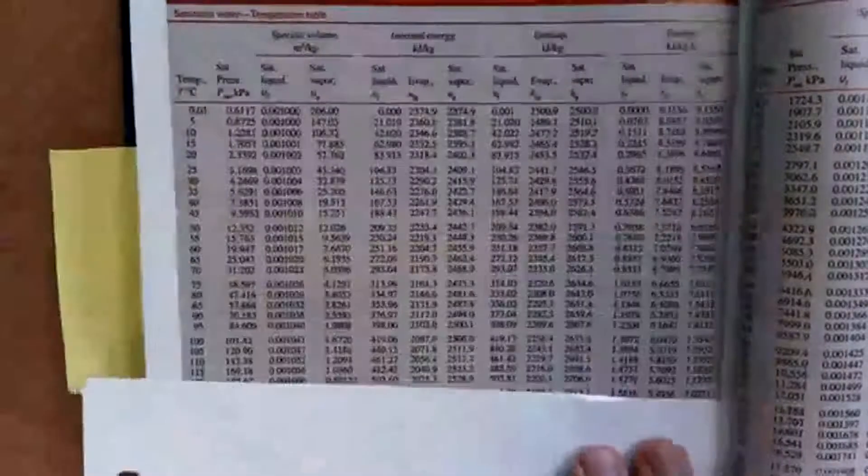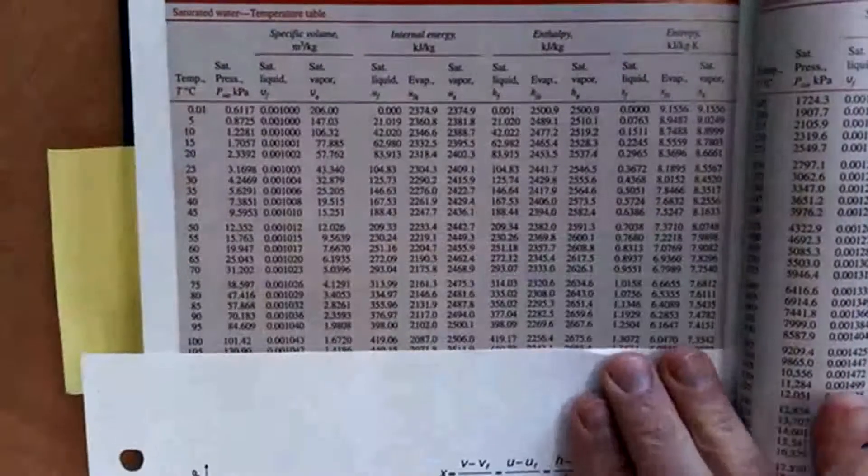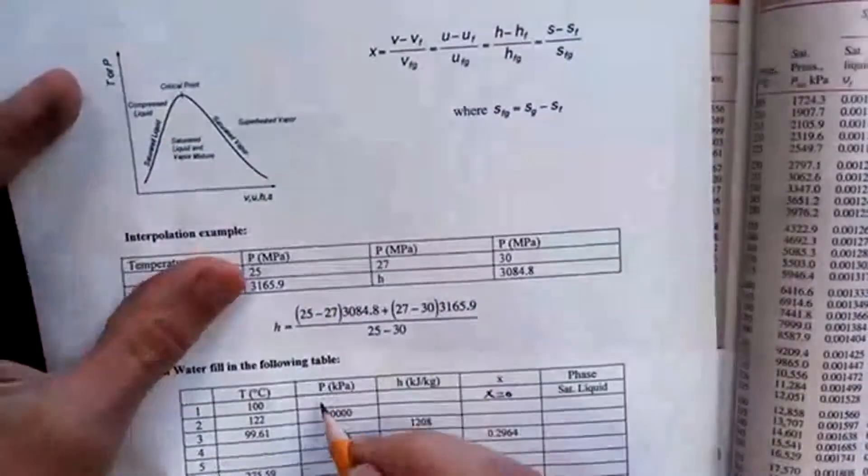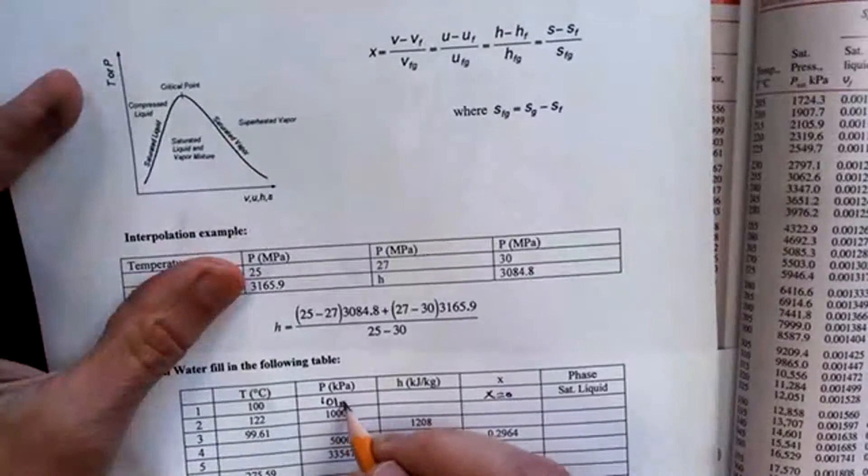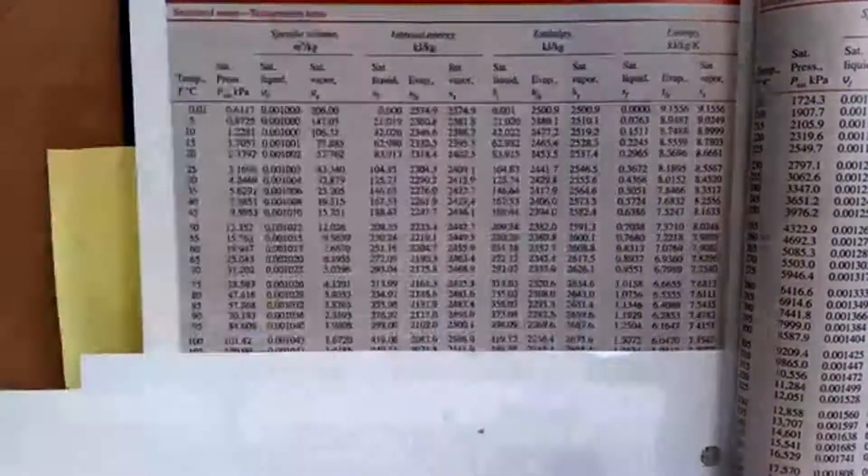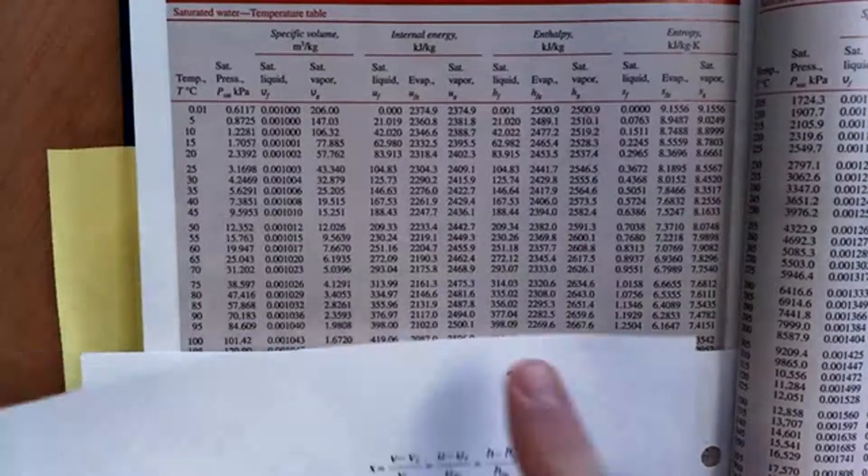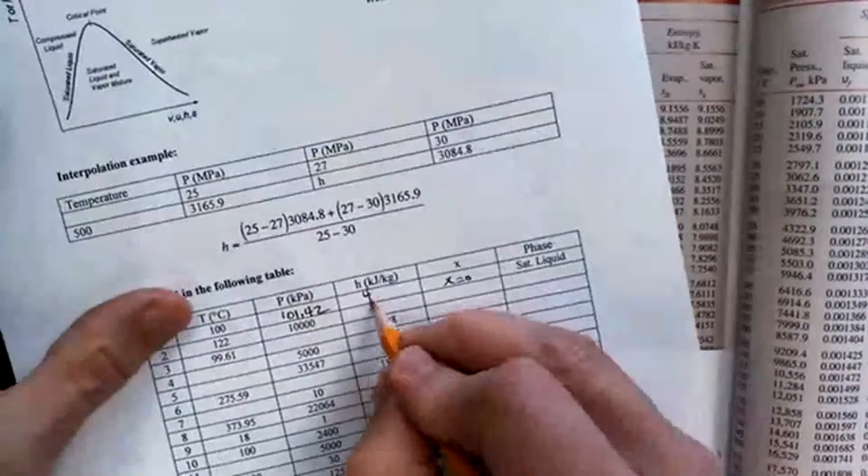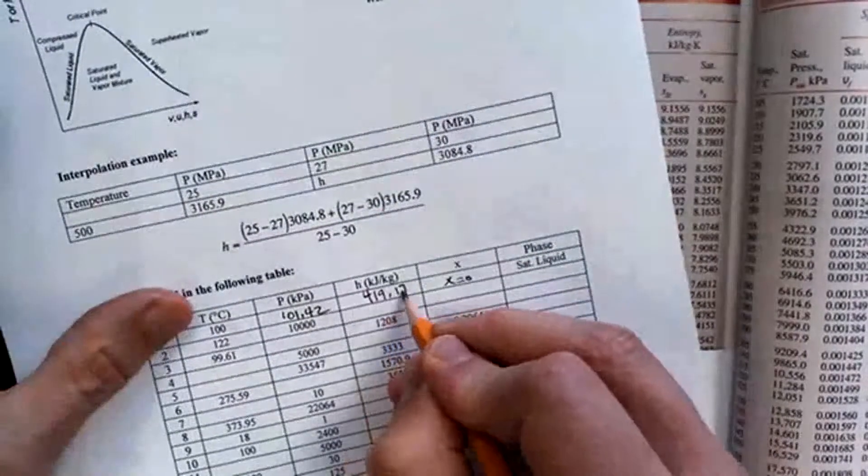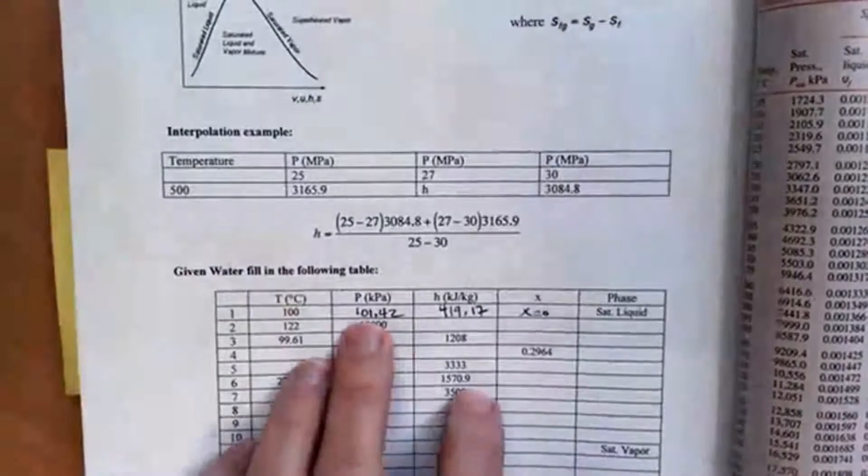The pressure will be this pressure right here, 101.42. And the enthalpy will be H_f = 419.17. So that was an easy one.